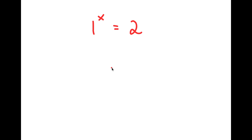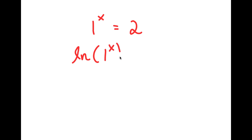In this problem, I have 1 to the power of x is equal to 2. Now to solve this, I'm going to take the natural log or ln on both sides. So I have ln 1 to the power of x is equal to ln 2.